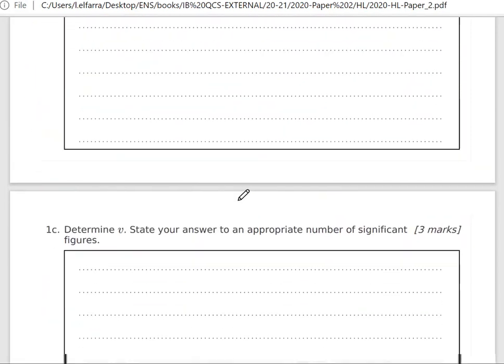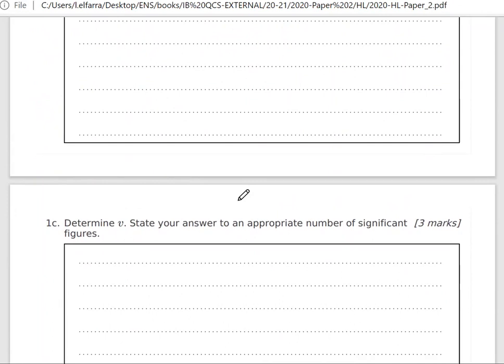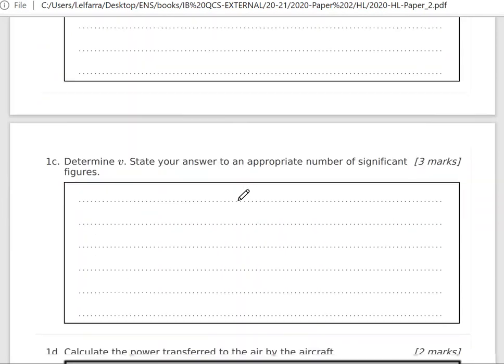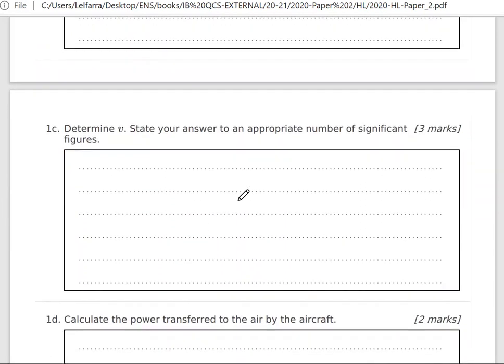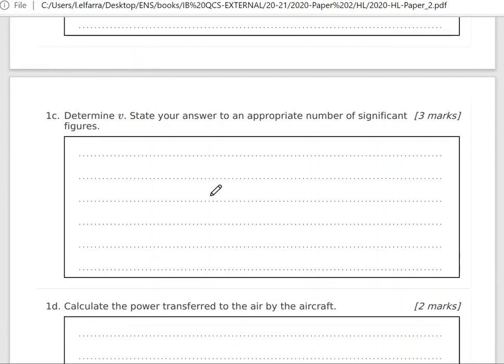Now he wants me to determine the velocity of air around to appropriate significant figures. I'm going to use Newton's second law of momentum. From Newton's second law, force equals change in momentum divided by change in time.